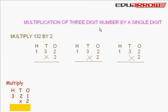Multiplication of a 3-digit number by a single digit. For example, multiply 132 by 2. Here, we write this in 3 words. First, we multiply the ones: 2 times 1 is 2. We write here 4.